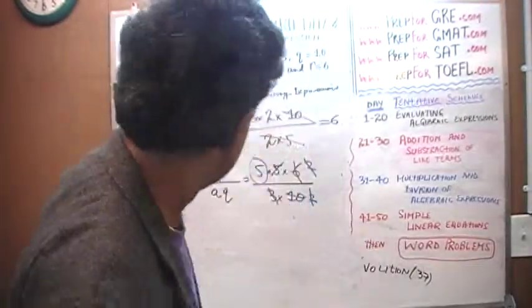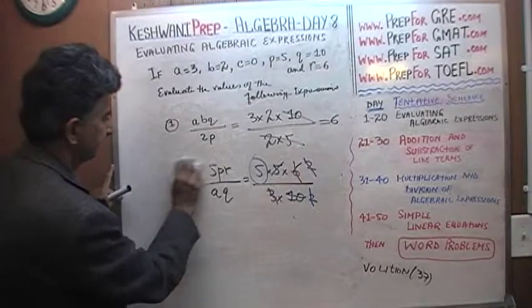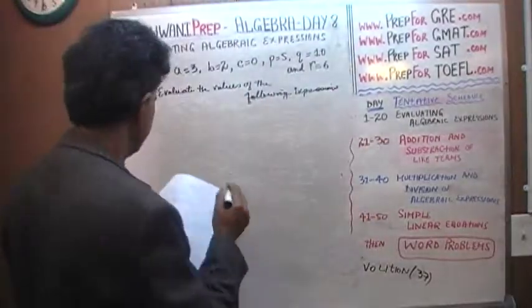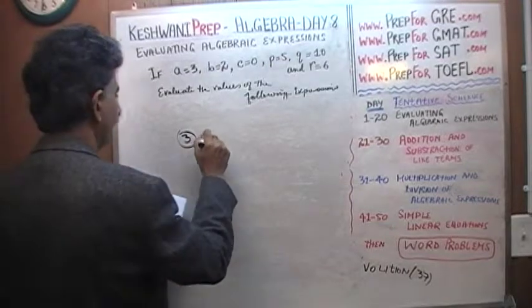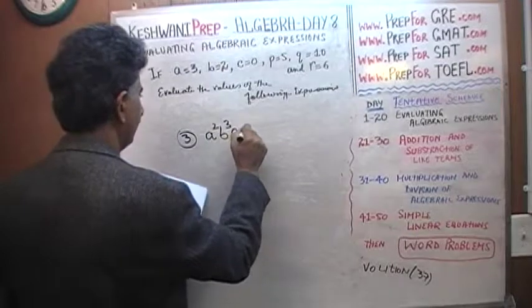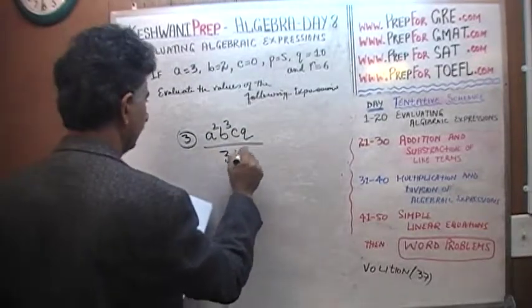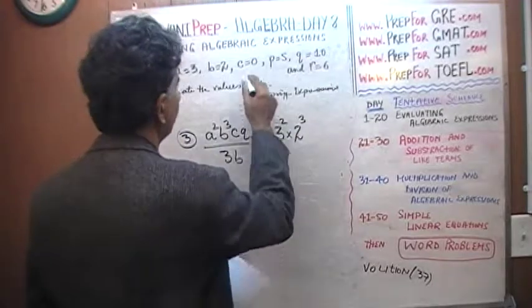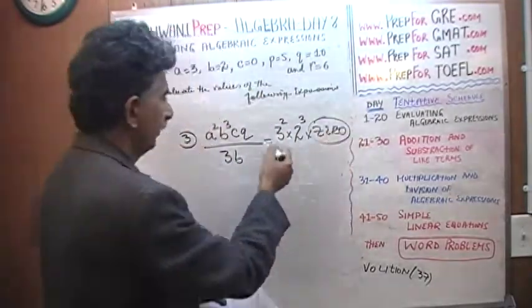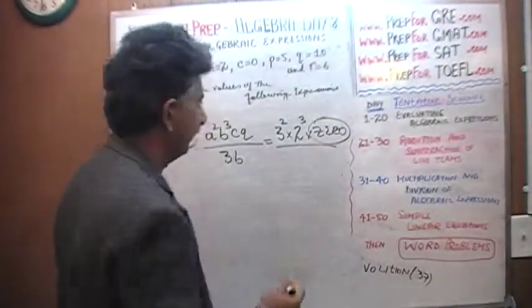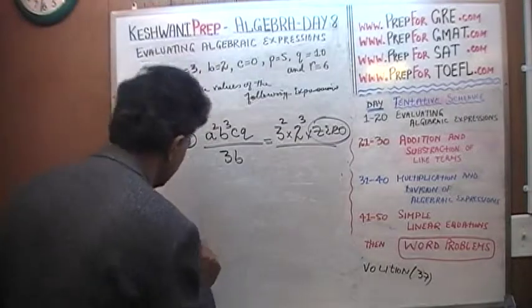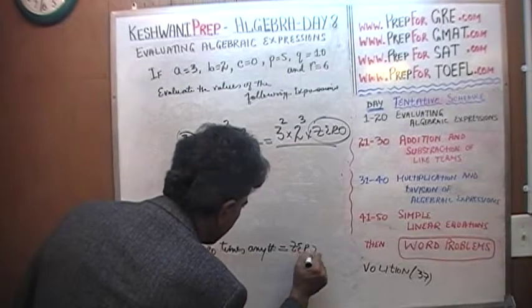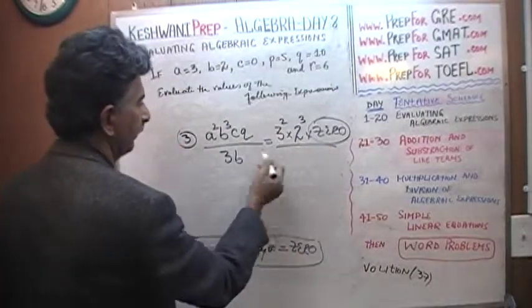Let's go to number 3. Number 3 is a nasty one. A squared times B cubed times C times Q over 3 times B. A squared which is 3 squared times B cubed which is 2 cubed times C. C is 0 times 0. I don't have to continue. 0 times any number is 0. So the whole thing is 0.